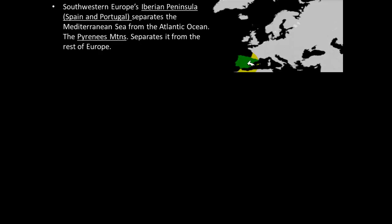The Iberian Peninsula, highlighted in green, encompasses the countries of Portugal and Spain in southwestern Europe. It separates the Mediterranean Sea from the Atlantic Ocean. The Pyrenees Mountains, located along the top of the peninsula, form a natural barrier separating Spain and Portugal from the rest of Europe.